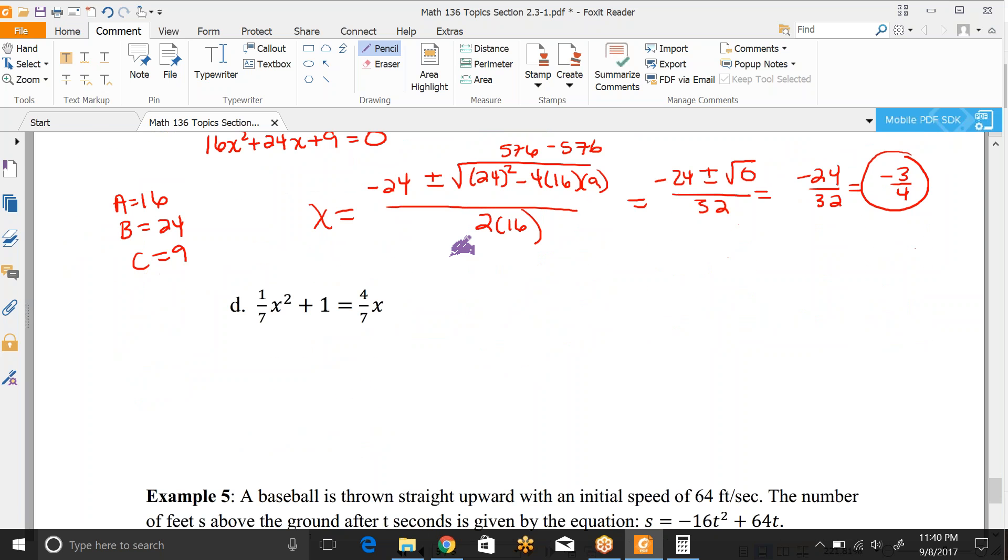And then the final one in this packet, we need to solve d. So I would get everything on one side first. So I'm going to move that 4 sevenths over by subtracting it. I would multiply everything by 7 on both sides to clear out those fractions. So that's just going to be x² - 4x. This will be 1 times 7, so that will be 7 = 0. So my a is 1, my b is negative 4, and my c is 7.